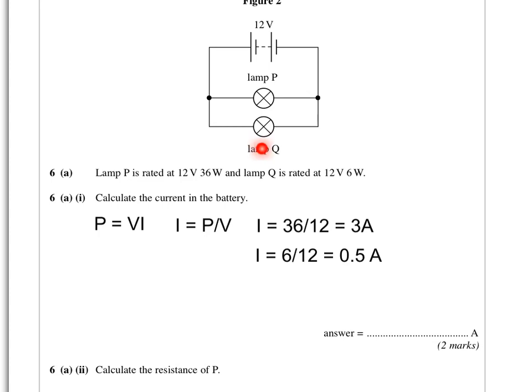For lamp Q, we've got 6 watts and 12 volts. The current is power divided by voltage again, 6 divided by 12, which is half an amp. If we combine those two currents, because the current splits as it goes around the circuit, we'd have 3 and a half amps.